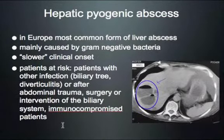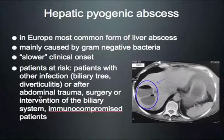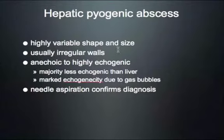The main differential of amoebic abscess is pyogenic abscess — the most common form of liver abscess in Europe. Mainly caused by gram-negative bacteria with a slower clinical onset. Risk factors include abdominal surgery, trauma, ERCPs, biliary tree infections, diverticulitis, and immunocompromise. On CT, gram-negative bacteria may cause gas bubbles — amoeba never cause gas. That is an important differentiating feature.